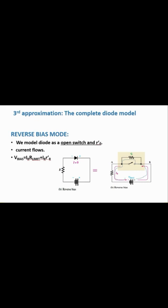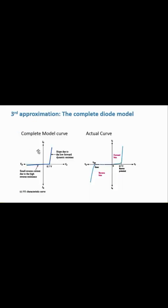Looking at the complete model curve, it is very close to the actual diode curve but still not perfect. The slope in the forward region appears due to the low forward dynamic resistance, and there is a small reverse current due to the high reverse resistance. Even the complete model is not truly complete.